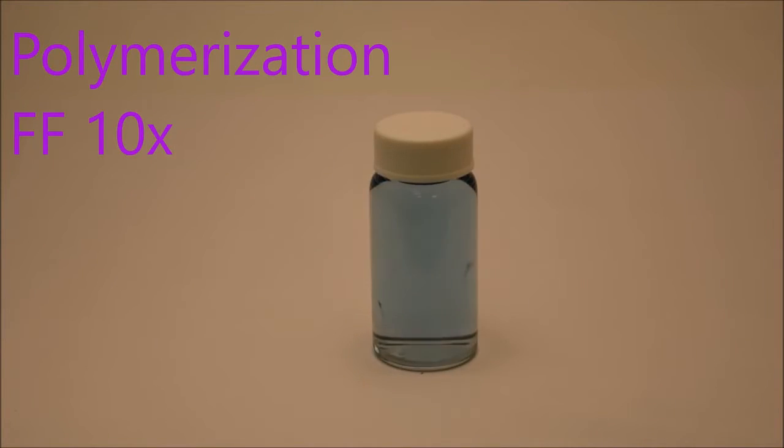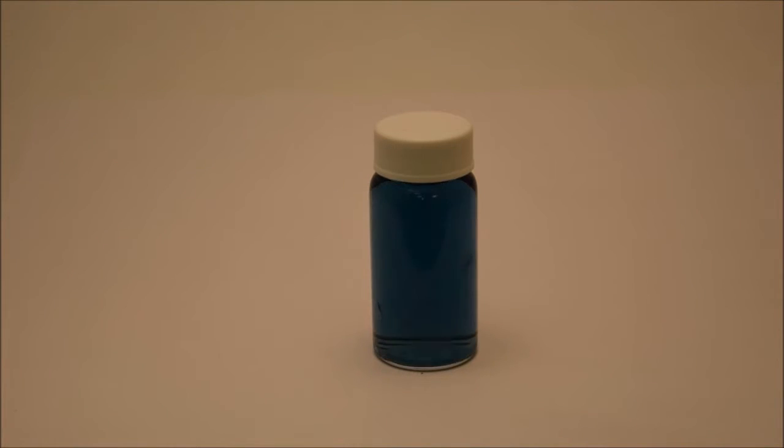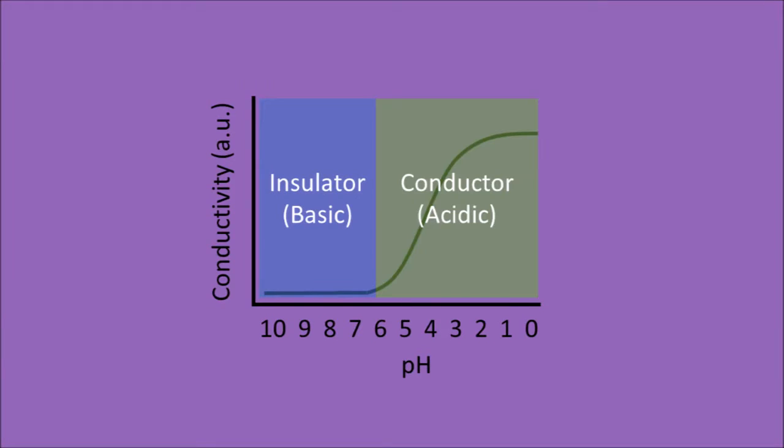The conductive polymer that we use is polyaniline, which you see polymerizing here. Its conductivity is changed in the presence of a base or acid.